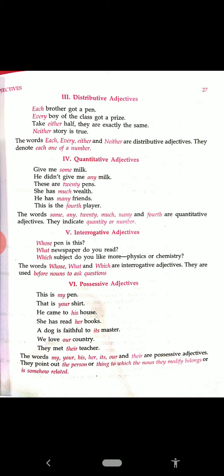Then quantitative adjective — quantity is there, less or more. Mostly the uncountable things are there. Give me some milk. He didn't give me any milk. These are twenty pence. She has much wealth. She has many friends. This is the fourth player. So the words some, any, twenty, much, many, fourth — they are called quantitative adjective because they indicate the quantity or a number.